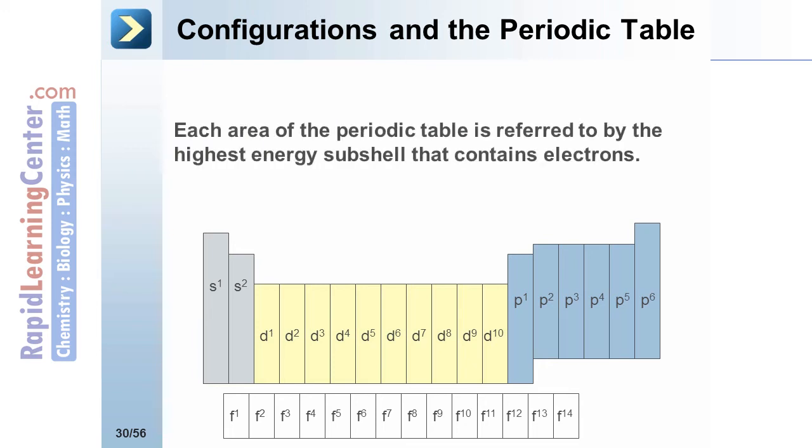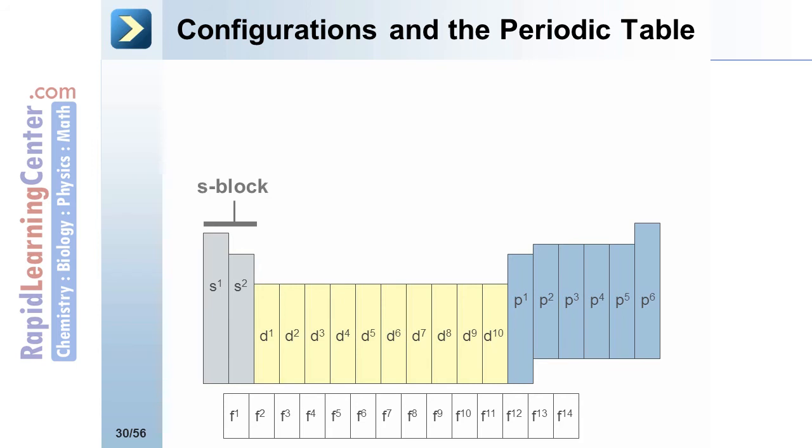We refer to parts of the periodic table by their highest energy subshell that's occupied. The first two columns are the s block. The far right side is the p block. The middle, the d block. And the bottom, the f block.